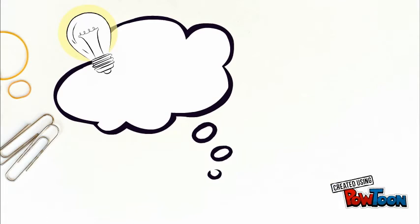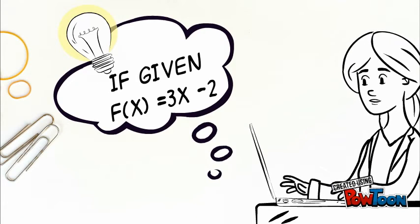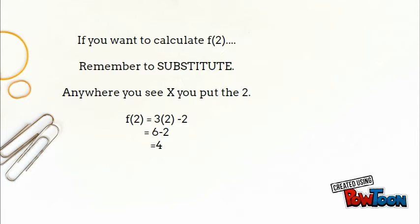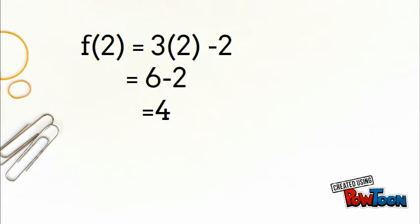Given that f(x) = 3x − 2, if you want to calculate f(2), remember you have to substitute. Anywhere you see x, you put the 2. Hence, f(2) = 3 × 2 − 2. 3 by 2 is 6. 6 minus 2 is 4. Hence, f(2) = 4.